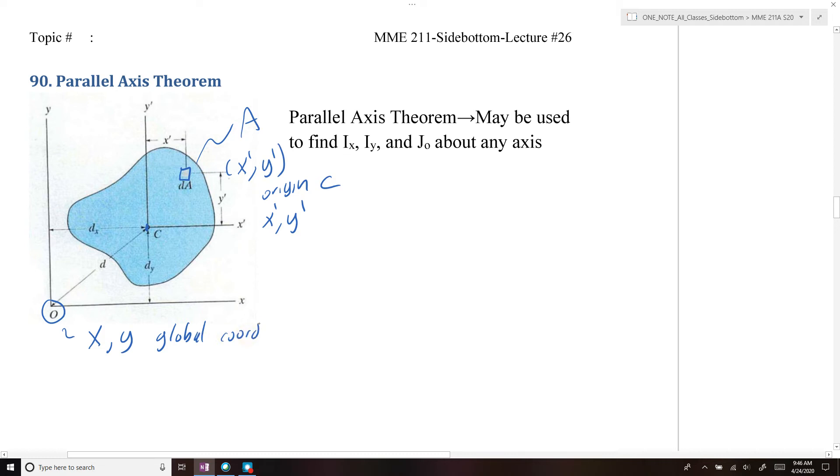And we can relate the origin C to our x-y global coordinate system using two lengths. So the length from the x-axis to the origin will be dy. And then the distance from the y-axis to the y-prime axis will be dx.